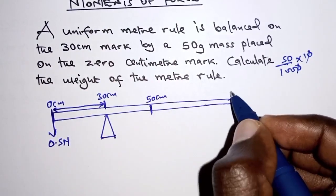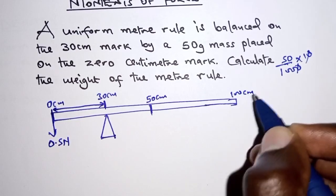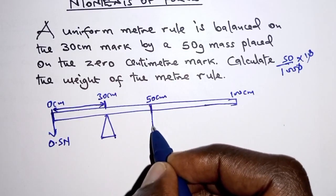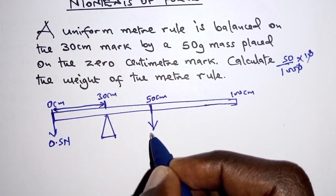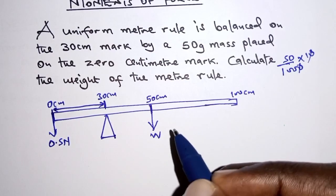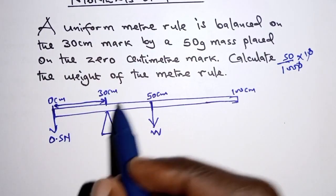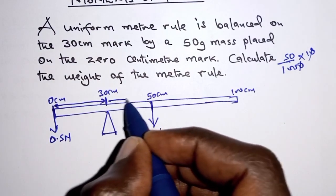Remember, a meter rule is 100 centimeters in total length. So at this point we have its weight acting. So we will apply the principle of moments by first of all knowing these distances.